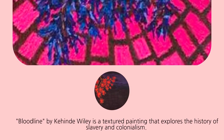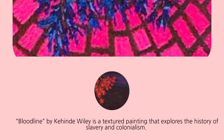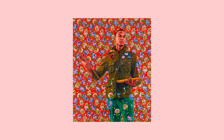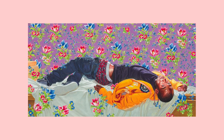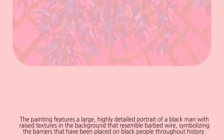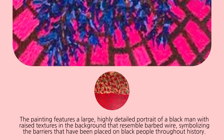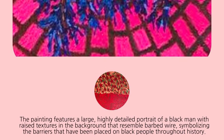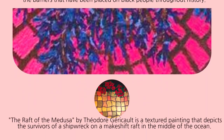Learned by Kehinde Wiley is a textured painting that explores the history of slavery and colonialism. This painting features a large, highly detailed portrait of a Black man with a raised texture in the background that resembles barbed wire, symbolizing the barriers that have been placed on Black people throughout history.